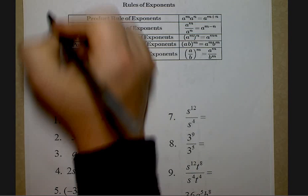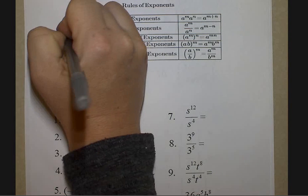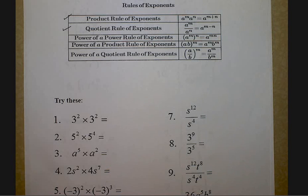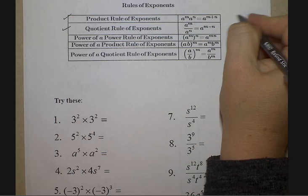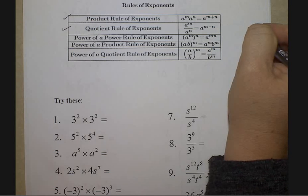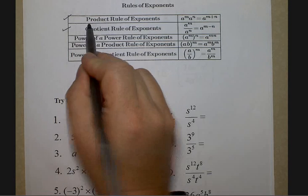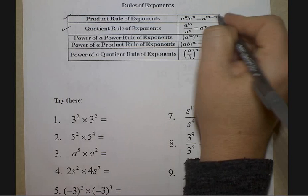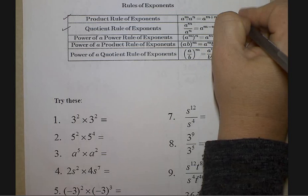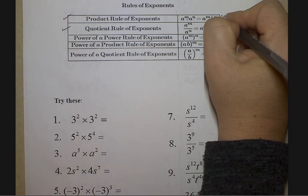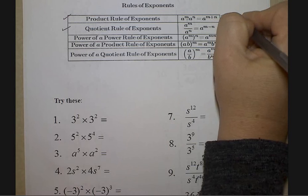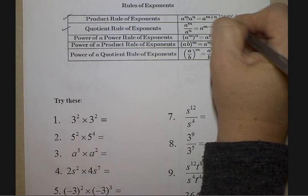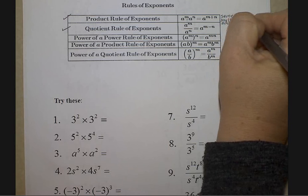Down here where it says 'try these,' they are going to reflect on understanding the first two rules. For me, it's not important that you memorize the name of the rule, only that you can apply it. If it helps to jot down a little bit of notes off to the side, feel free to do that. This rule says: when you have the same base and you're multiplying, you're going to add the exponents. Same base and multiplying — add exponents. That's what the first rule says.